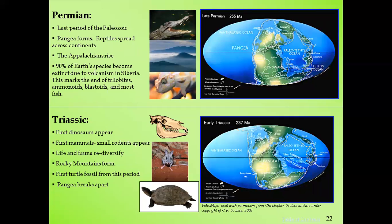The mixing of animal lineages occurred because the continents collided during the Permian, allowing organisms to travel and spread. After that, the continents separated again. The Appalachians also began to rise due to the collision of different continents.